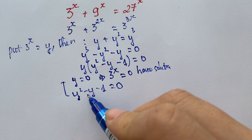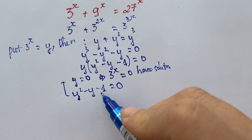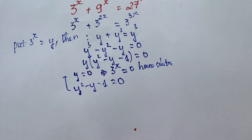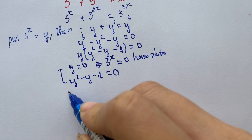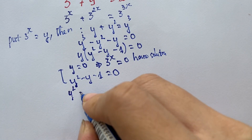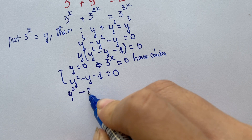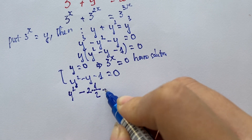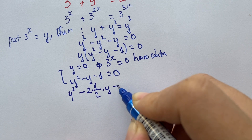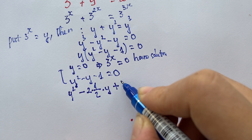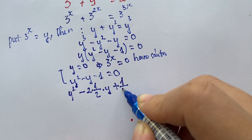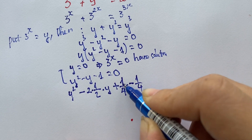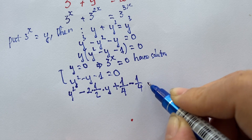So you can see the equation y squared minus y minus 1 equals 0. We have y squared minus 2 times one half times y, yes, and plus one fourth, minus one fourth, and minus 1 equals 0.